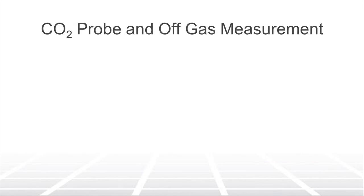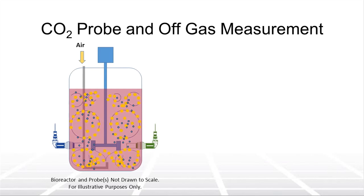CO2 probes utilize pH probe technology by surrounding the pH probe with a bicarbonate solution that is separated from the media via a hydrophobic membrane. That membrane allows CO2 to diffuse across it and into the bicarbonate solution, and relay the CO2 levels to the bioreactor controller.